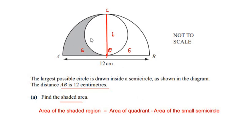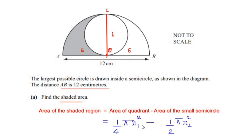Area of the shaded region equals area of the quadrant minus area of the small semicircle. The formula for area of a quadrant is one over four times pi r squared, and the formula for area of a semicircle is one over two times pi r squared.